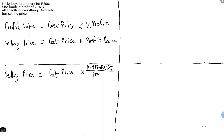We have two formulas on the screen. The first one might be a bit easier, but I'm going to explain the second one first. If you get the second one, you don't need to listen to the first. If you don't get the second one, you'll need to listen to the first.